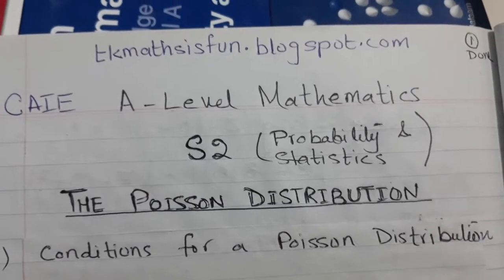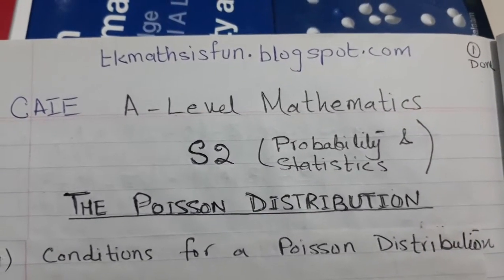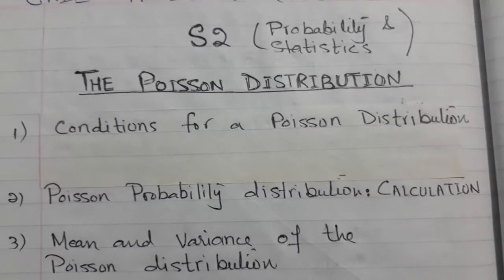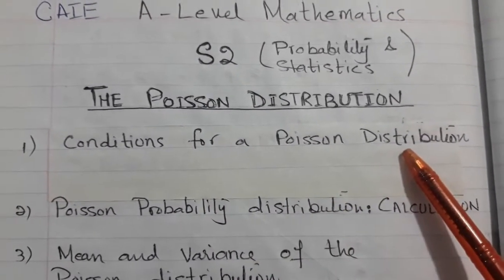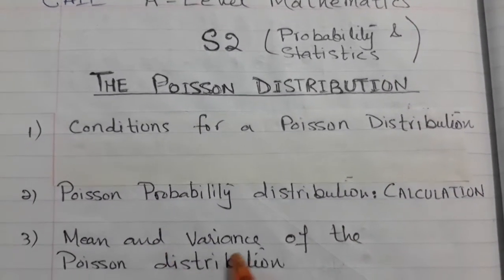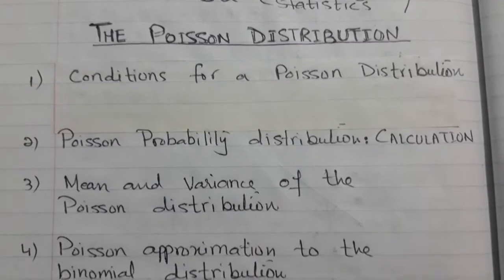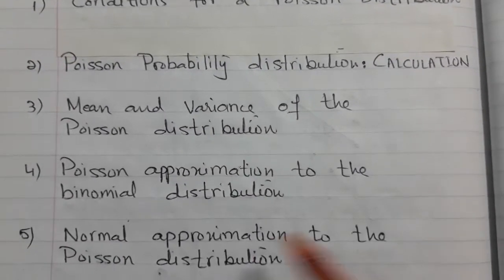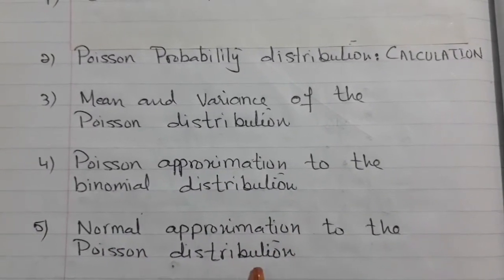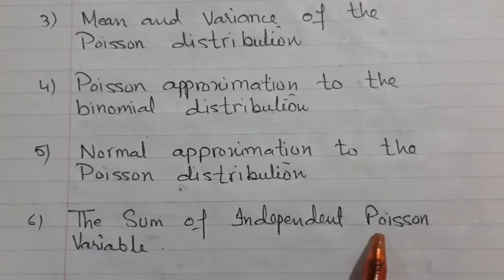If you want to see video number 1 and 2, you can go to the blogspot and find the link there. I have covered the following concepts in the previous videos: conditions for a Poisson distribution, Poisson probability distribution calculation, and mean and variance. In video number 2 I covered Poisson approximation to the binomial distribution and normal approximation to the Poisson distribution. Now in this video I will cover the sum of independent Poisson variables.